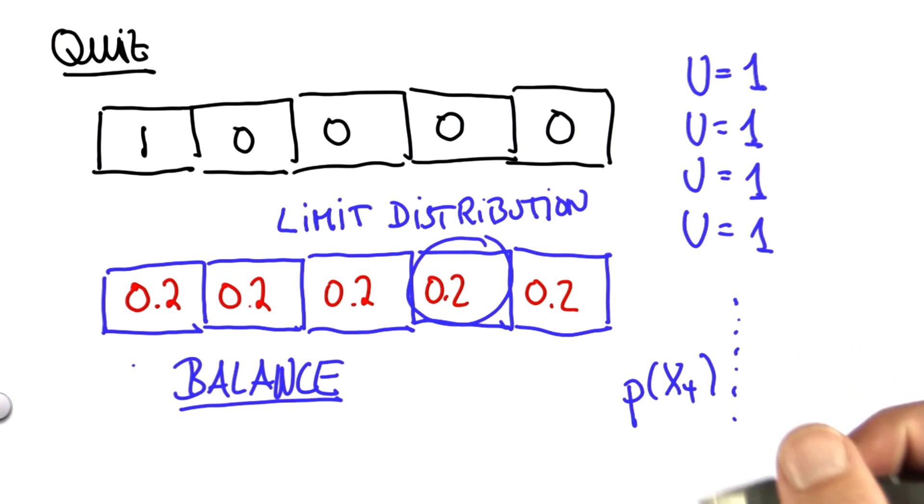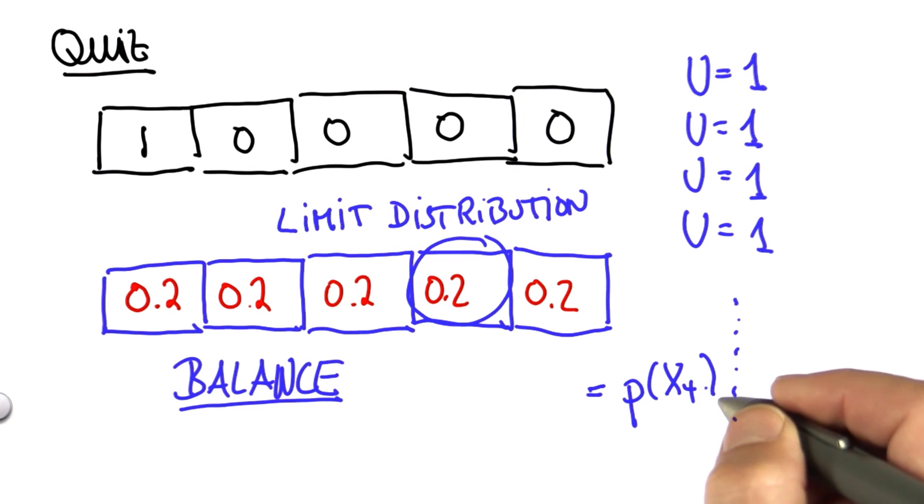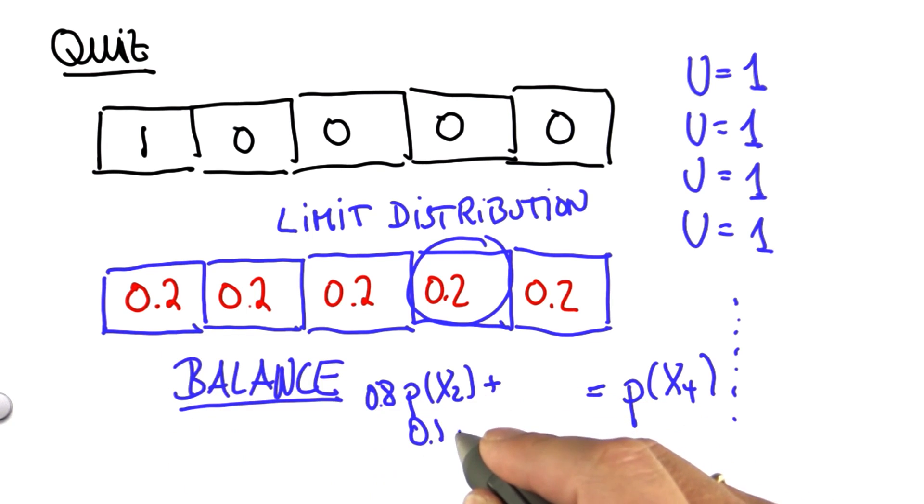For this to be stationary, it has to be the same. Put differently, the probability of x4 must be the same as 0.8 probability of x2 plus 0.1 probability of x1 plus 0.1 probability of x3.